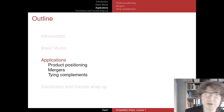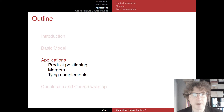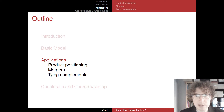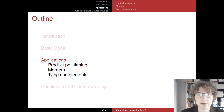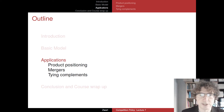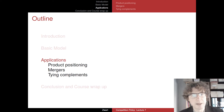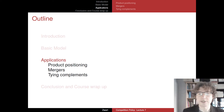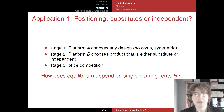Let's go to some of the applications of this model. First, the choice of product positioning: are you going to position your product as a direct competitor or substitute for your rivals, or would you rather produce a good or service which is independent in terms of demand from those of your rival? Then I'll look at mergers, and finally tying.